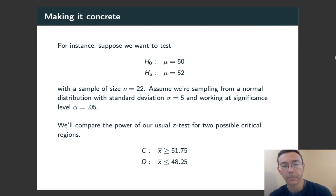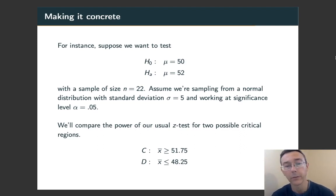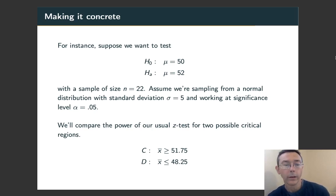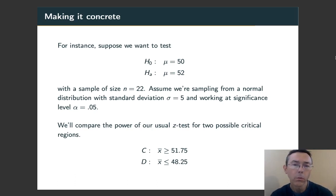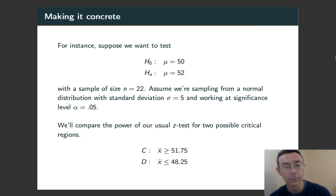Let's have a simple example. We've got a null hypothesis that a population mean is 50, and we're testing an alternative hypothesis that it's greater than 50. For a sample of size 22 from a normal distribution with standard deviation 5 and significance level alpha, the critical region C for the alternative hypothesis mu greater than 50 is x-bar greater than or equal to 51.75 — just the way we've worked in the past, sort of on faith. Let's pick another region D: x-bar less than or equal to 48.25, essentially looking at the wrong tail.